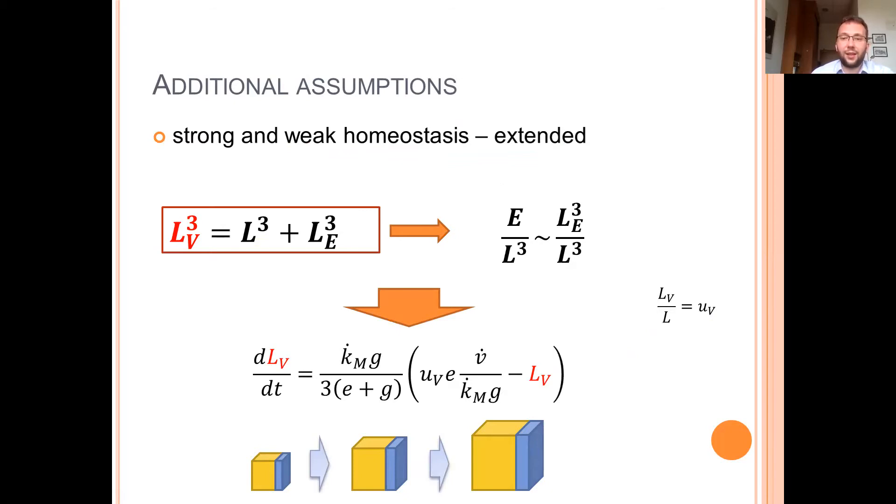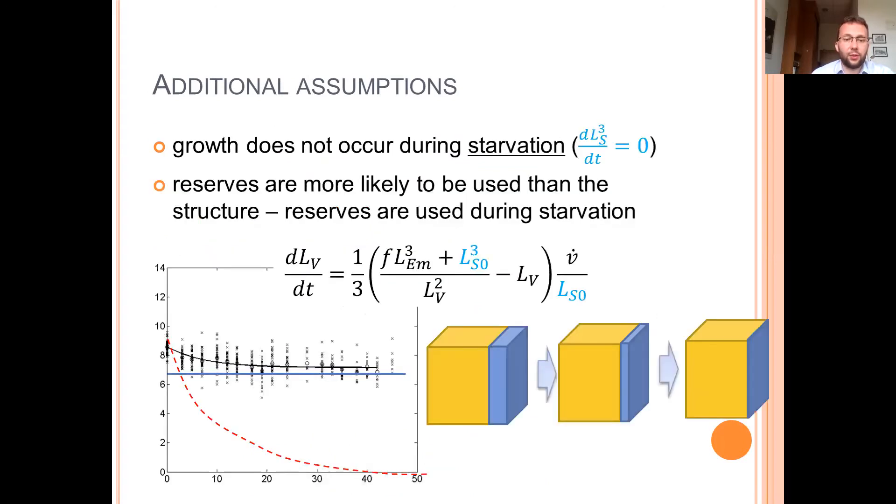And the δV is a conversion factor from structural to volumetric length. However, during starvation, the organism uses reserves. They are preferred. And the decrease of larvae volume is proportional to decrease of reserves volume.